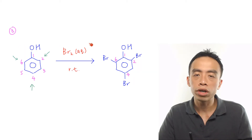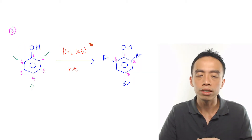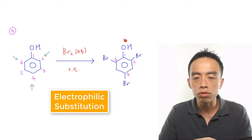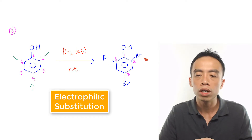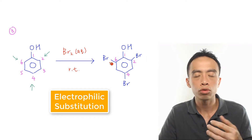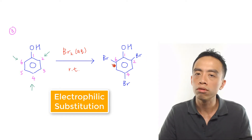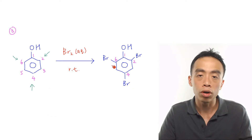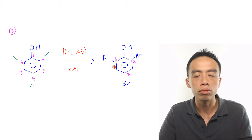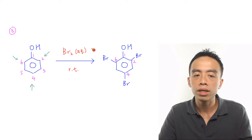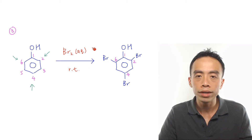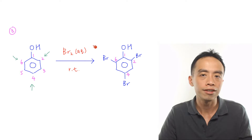Major reaction number 3 involving phenol is the tri-substitution of phenol to form 2,4,6-tribromophenol, because the OH group is a highly activating group. This is done using aqueous bromine at room temperature.